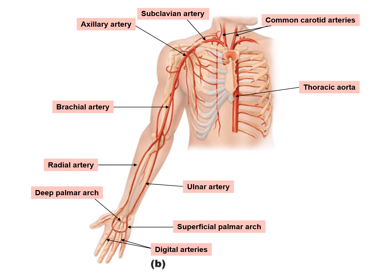Looking at this diagram, we have the ascending aorta, aortic arch, descending thoracic aorta, then the abdominal aorta, with three branches: brachiocephalic, left common carotid, and left subclavian. The brachiocephalic divides into right common carotid and right subclavian. We call it subclavian because it runs posterior to the clavicle — kind of posterior and under the clavicle.